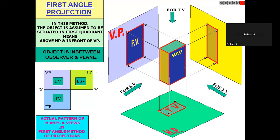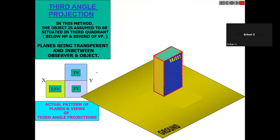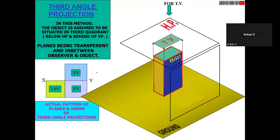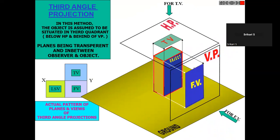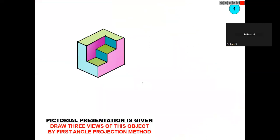Let us now see the third angle projection. In third angle projection, the top view will always be on the top — not in front, but on the top. So this is the top view, and this is the front view.